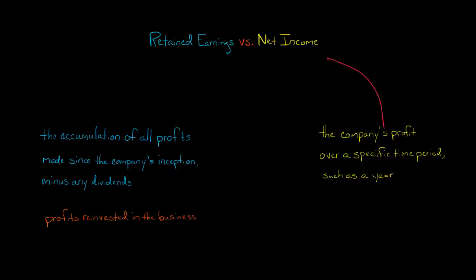Retained earnings and net income are related in the following way. Let's say we have a company with three years of business: year one, year two, and year three. In year one, the net income is $100 and there are no dividends declared. So at the end of year one, the retained earnings would be $100.